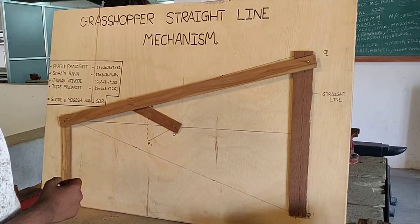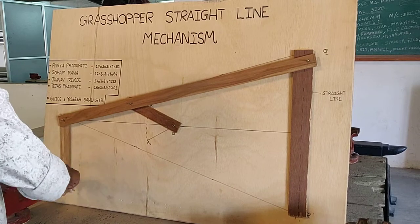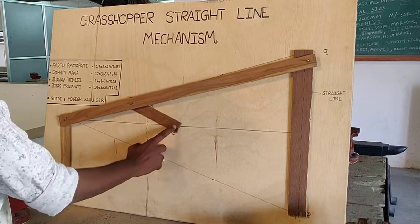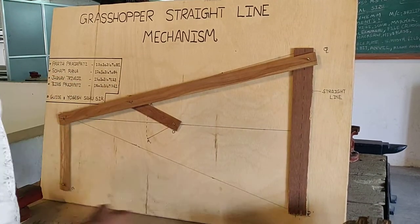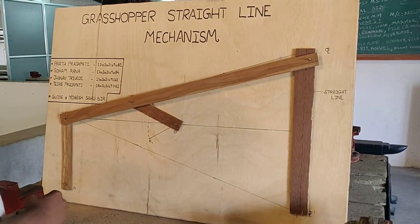These both points are fixed. It is a 4-bar mechanism and all the pairs are turning pairs. You can see the turning pairs.